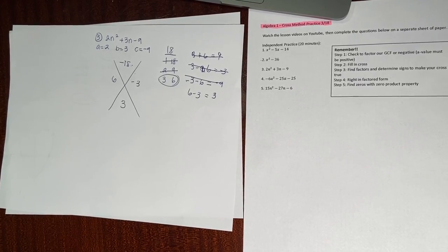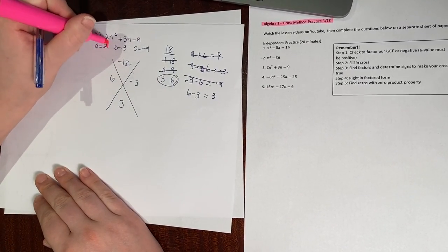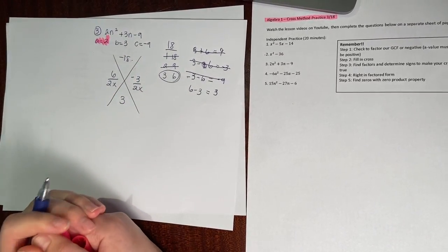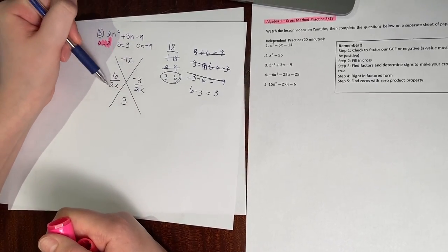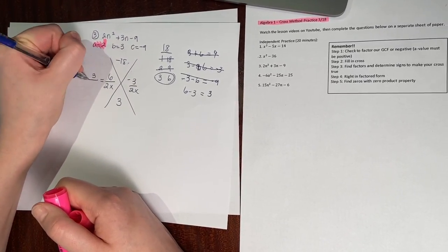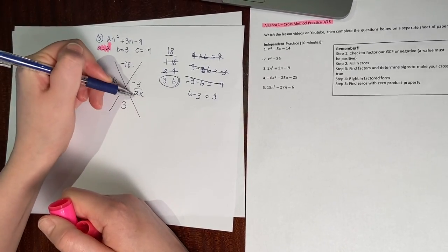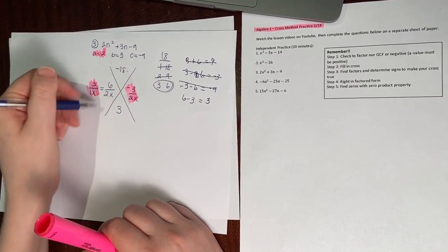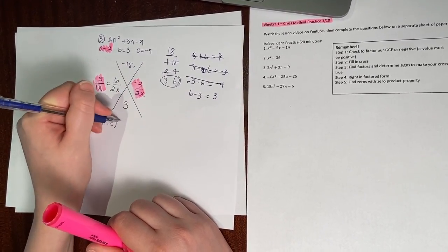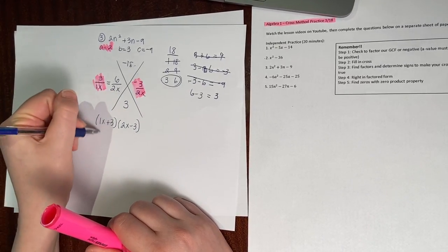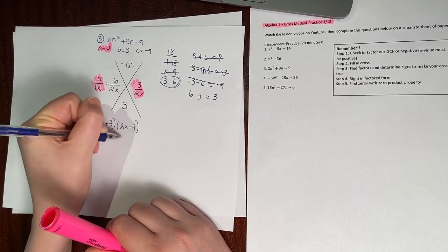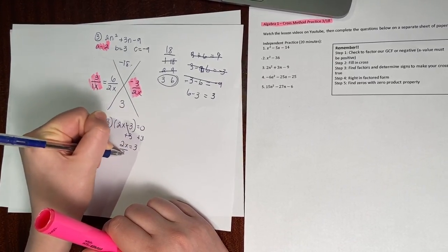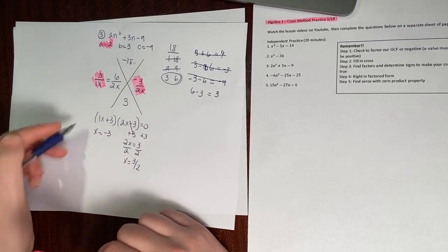Here's the new part: my a value is 2, so I'm not dividing by 1x — I'm dividing by 2x. I need to check if I can reduce either fraction. 6 divided by 2 reduces, giving me 3 over 1x. 3 over 2 doesn't reduce. So my new factor pairs are 1x plus 3 and 2x minus 3. Setting 2x minus 3 equal to 0, I add 3 to get 2x equals 3, so x equals 3 over 2. Those are my zeros.